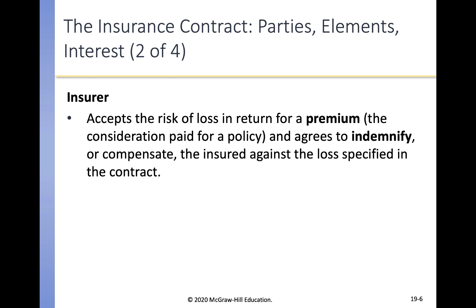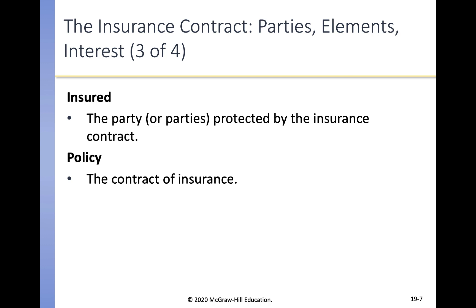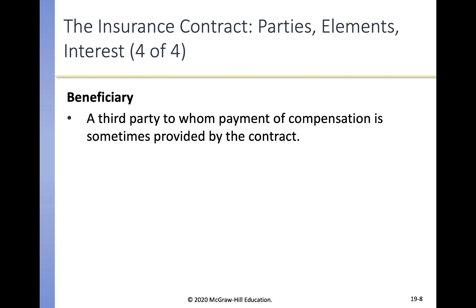The insurance contract has the following parties. The insurer accepts the risk of loss in return for a premium — this is the insurance company — and agrees to indemnify the insured against specified losses. The insured is the party protected by the contract, and the policy is the contract of insurance. There may also be a beneficiary — a third party to whom compensation is sometimes paid. For example, a life insurance policy will pay proceeds to the named beneficiary upon the insured's death.